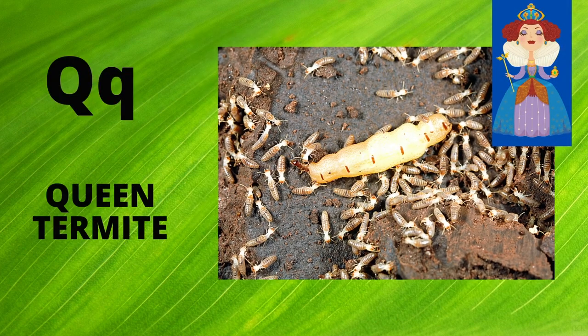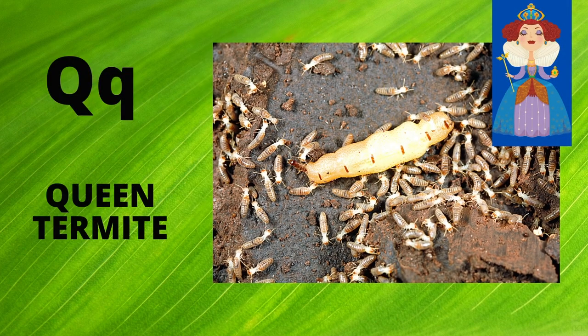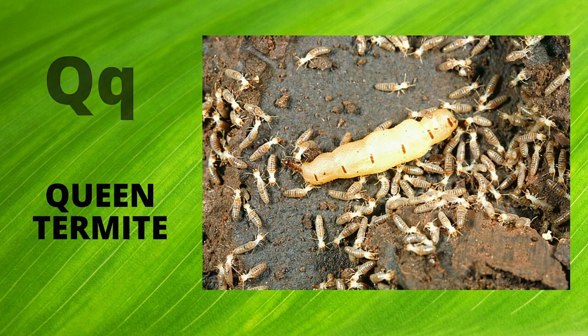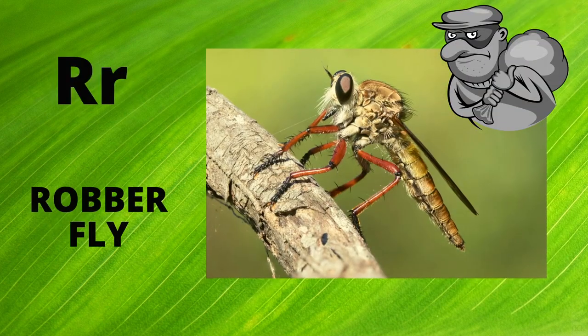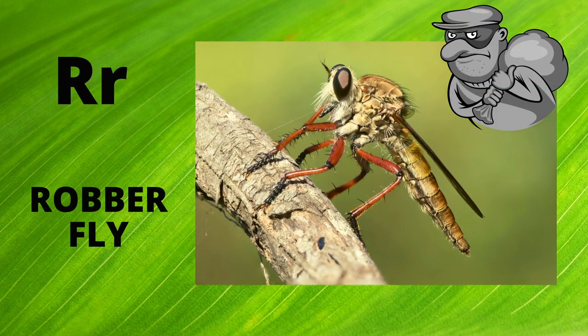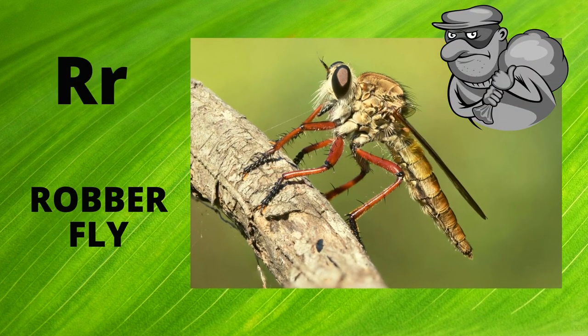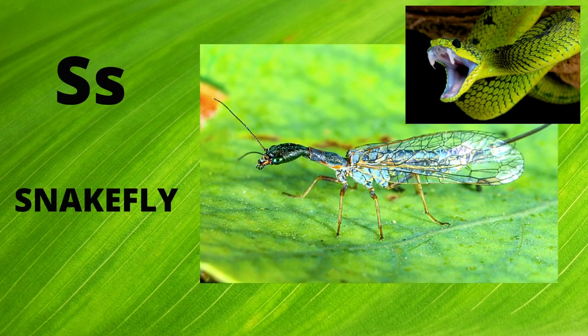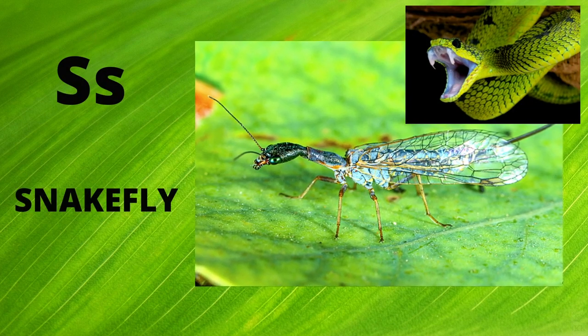Q is for Queen Termite. Q. Queen Termite. R is for Robberfly. R. Robberfly. S is for Snakefly. S. Snakefly.